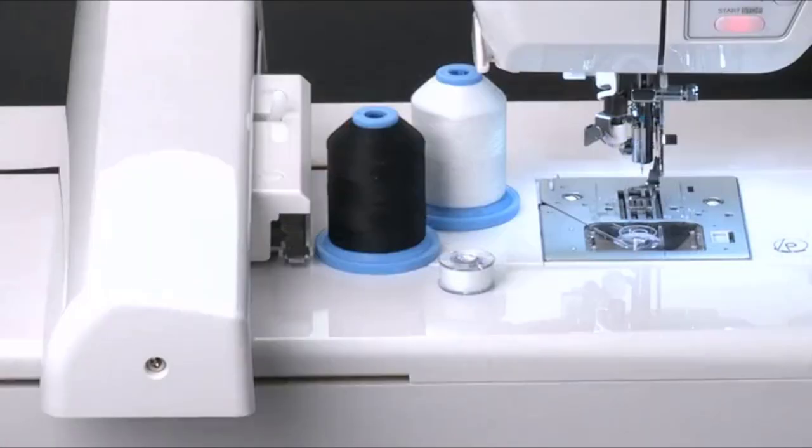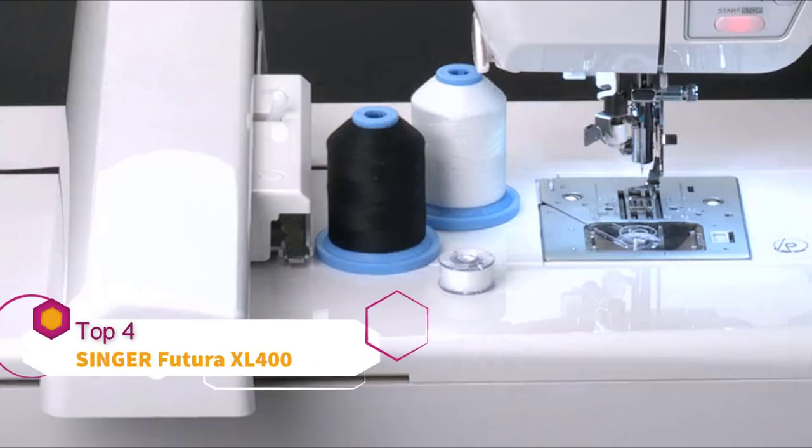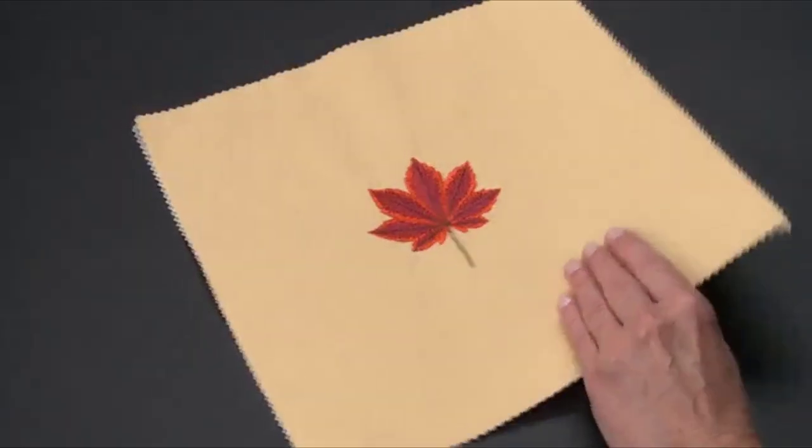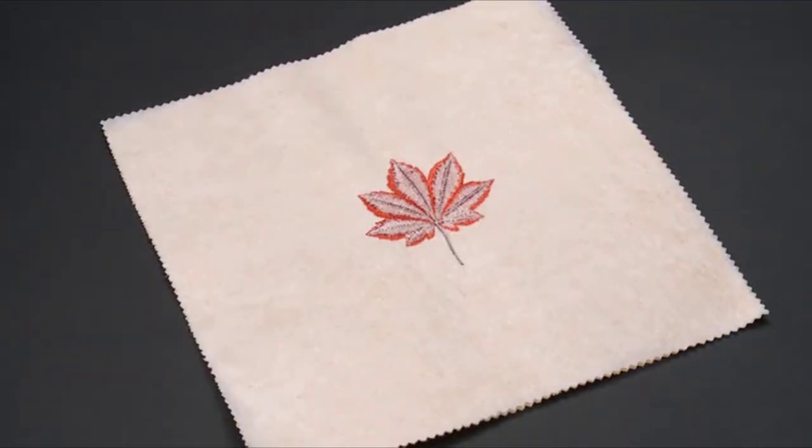For the bobbin, it is best to use a lighter weight thread such as bobbin fill. By using a lightweight thread in the bobbin, your embroidery designs will be less dense on the back than if standard weight thread is used.